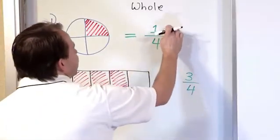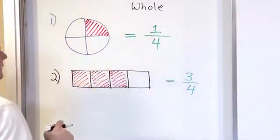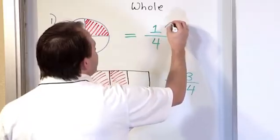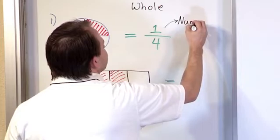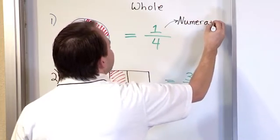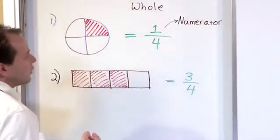Now is a good time to review the special names that we have for the top and the bottom of this fraction. When you have a fraction, the top number is always called the numerator. I know it's a big fancy sounding word, but it's called numerator.